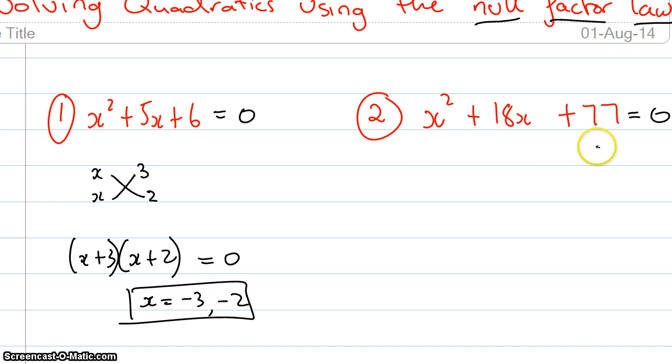I'm going to move on to this one over here. Again I'm going to use the cross method. I've got x and x, and for me I'm going to have 7 and 11. I've done these before so I know what the answers are. So then it's going to be x plus 7, x plus 11, equals 0.